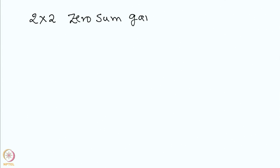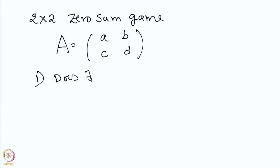We consider 2x2 zero-sum games. You have a matrix A with only two pure strategies for both players. How do we calculate the saddle point equilibrium? The first question is: does there exist a pure saddle point equilibrium?